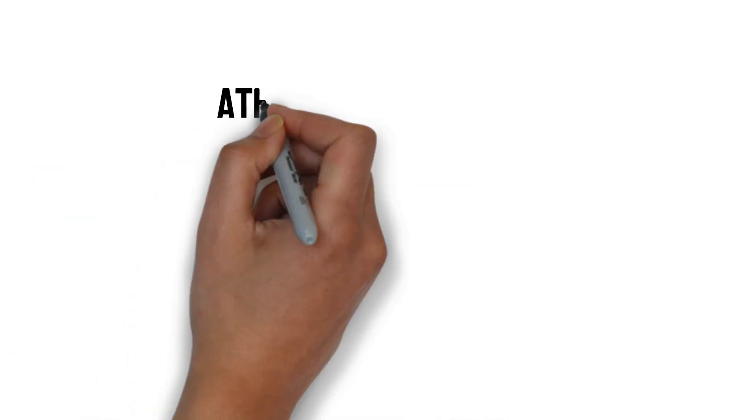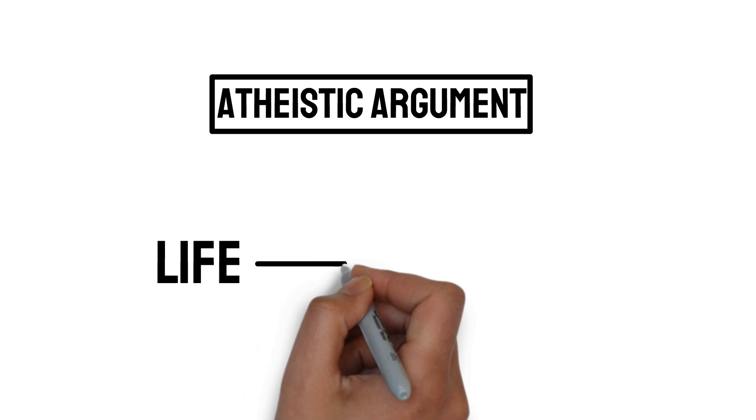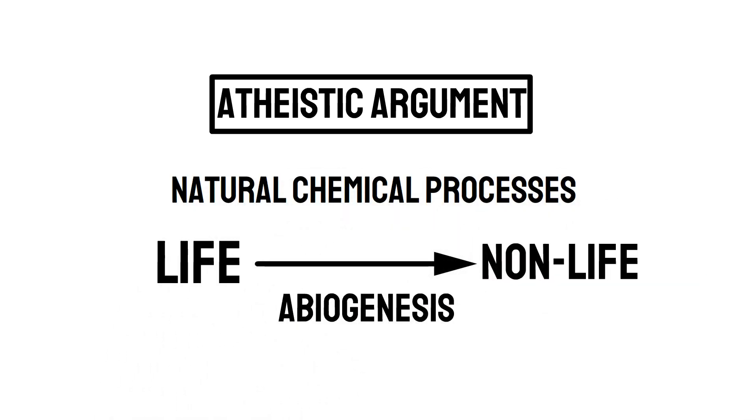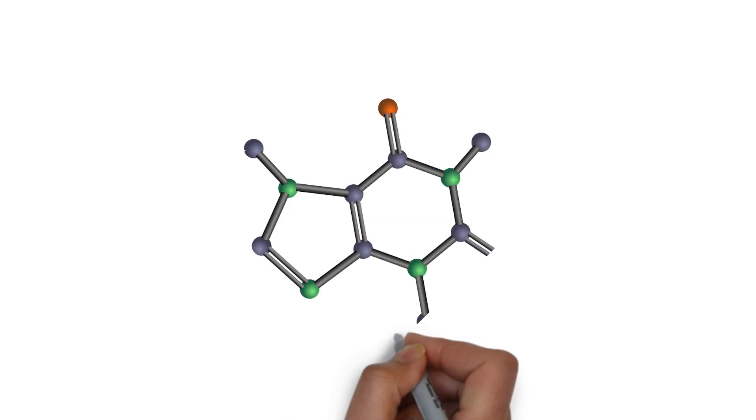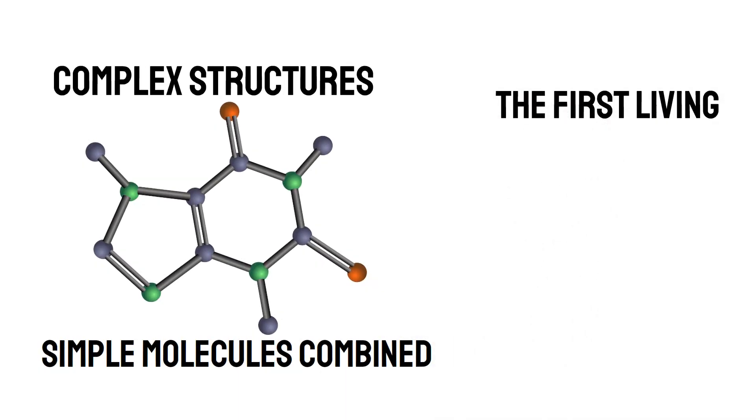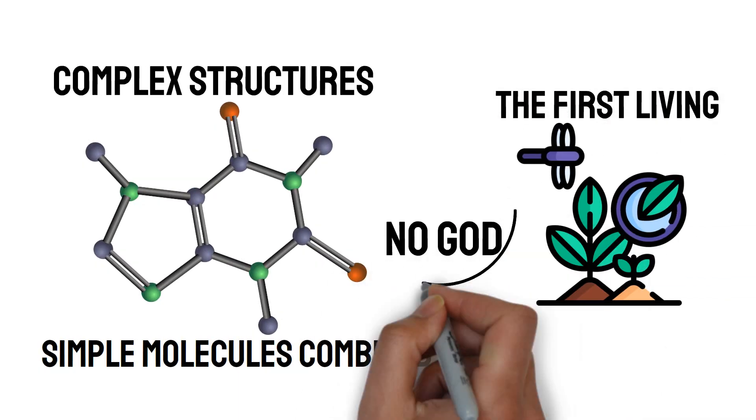Atheists will argue that life originated from non-life through natural chemical processes. This is called abiogenesis. Over millions of years, simple molecules combine to form more complex structures, eventually leading to the first living organisms. No god is required for this process, they say.